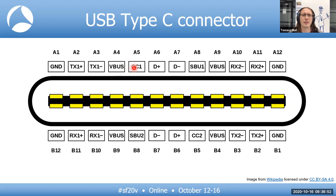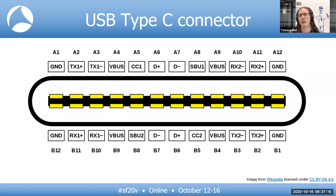The CC1 and CC2 pins are the configuration channels used for USB Power Delivery features. USB PD can be used to change the voltage on the VBUS pins — the voltage can go up to 20 volts and maximum current is 5 amps. To deliver 100 watts of power, an electronically marked cable assembly is needed, which includes a USB-PD controller chip inside the cable itself. USB-PD can also be used to configure alternate mode — for example, Thunderbolt 3 operates at 40 Gbit.